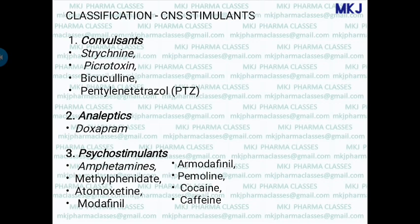The first class, convulsants, includes drugs which cause convulsions or seizures. Examples are strychnine, picrotoxin, bicuculline, and pentylenetetrazole. The second class, analeptics, are drugs which stimulate respiration — the example is doxapram. The third class, psychostimulants, stimulates your psyche. The drugs include amphetamines, methylphenidate, atomoxetine, modafinil, R-modafinil, pemoline, cocaine, and caffeine.